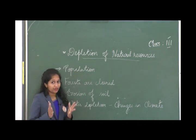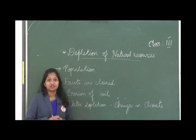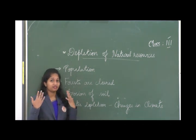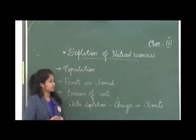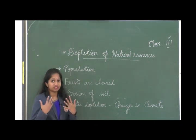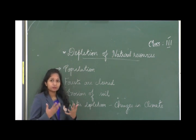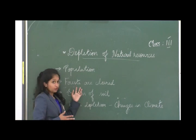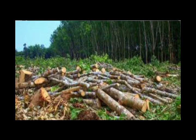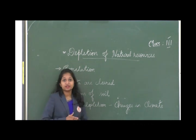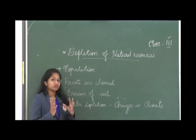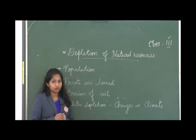What are the factors causing depletion? One is population — the rise in population leads to depletion of natural resources because when population increases, people use more and more natural resources. Forests are being cleared to build homes, flats, and apartments. Trees are being cut, and since trees are cut, they cannot prevent soil erosion, so soil is being depleted.